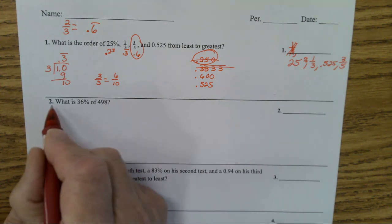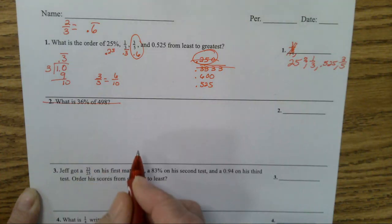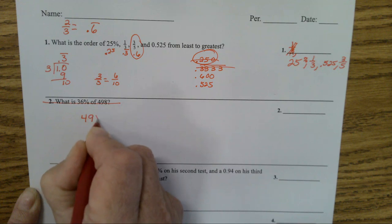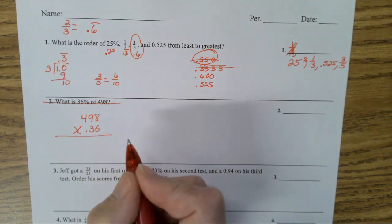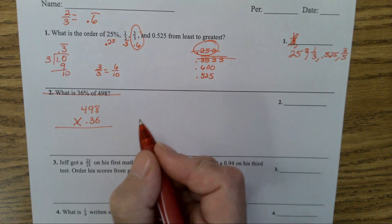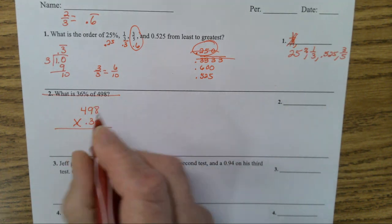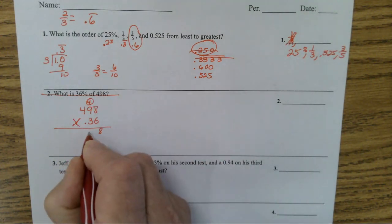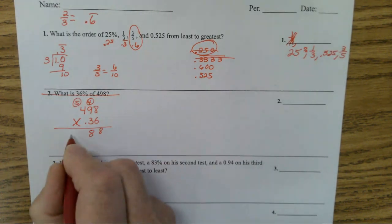In this problem, we didn't really do problems like number two - that's not going to be on your test. But if you want to know how to do that, 'of' means times. You're going to have 498 times 0.36. That is a seventh grade standard in Indiana. Let's go over how to do this: 'of' means times. So 6 times 8 is 48, carry a 4. 54 plus 4 is 58, carry a 5. 24 plus 5 is 29.